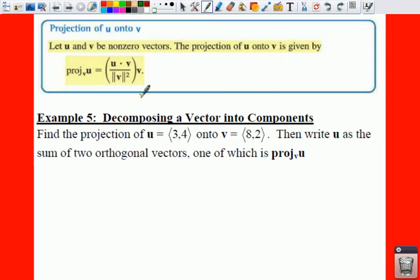For example 5, let's find our projection of U onto V. We're going to write U as the sum of two orthogonal vectors, one of which is a projection of U onto V. We need to find our projection of U onto V, which is W sub 1, which is your U dot V all over the magnitude of V squared times your vector V.